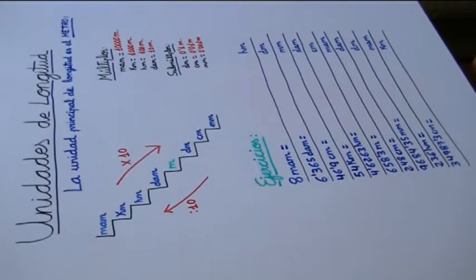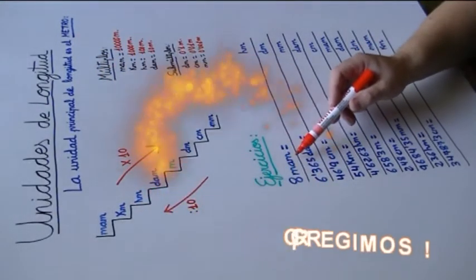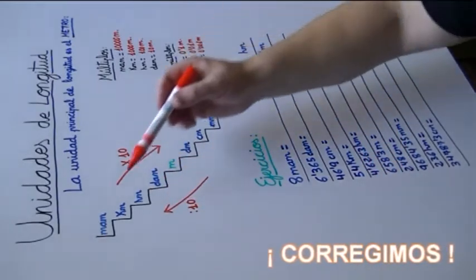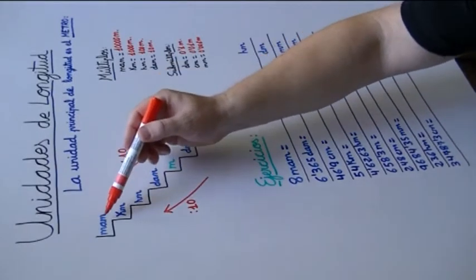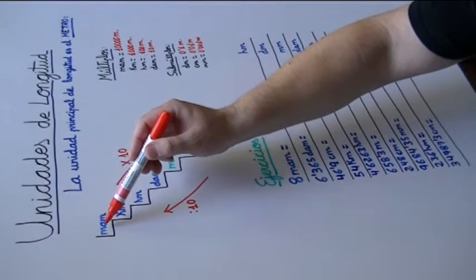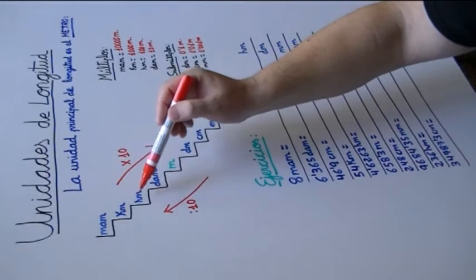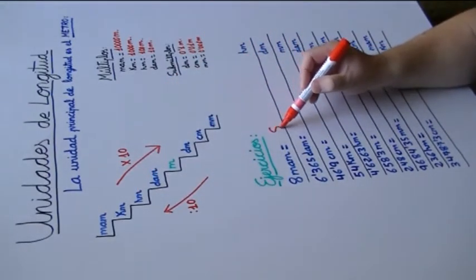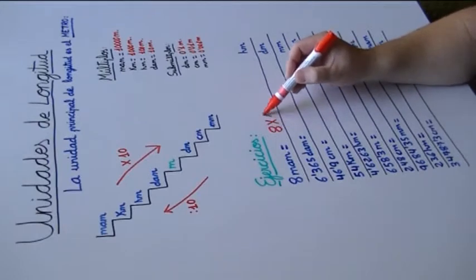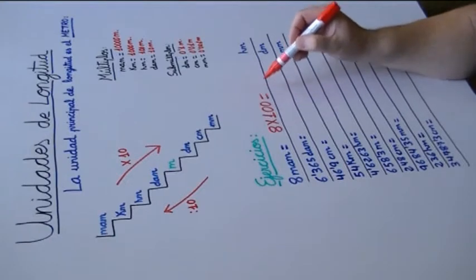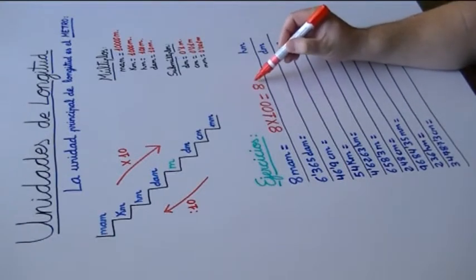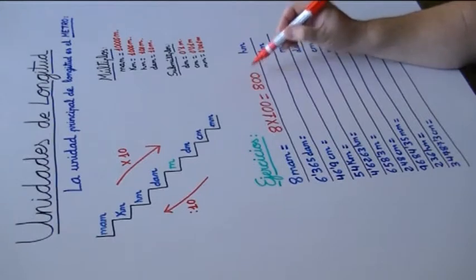A continuación vamos a realizar los ejercicios. Queremos pasar 8 miriámetros a hectómetros. El escalón del miriámetro ya lo tenemos andado. Tenemos que bajar: kilómetro 1 y hectómetro 2. Pues multiplicamos 8 por 100, porque son dos escalones los que tenemos que bajar.